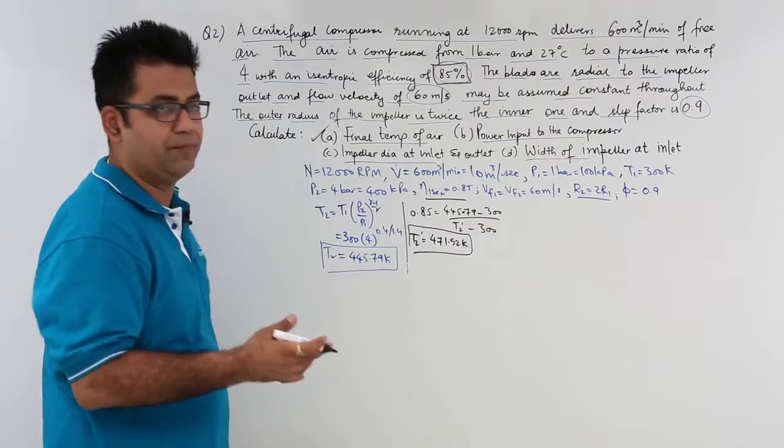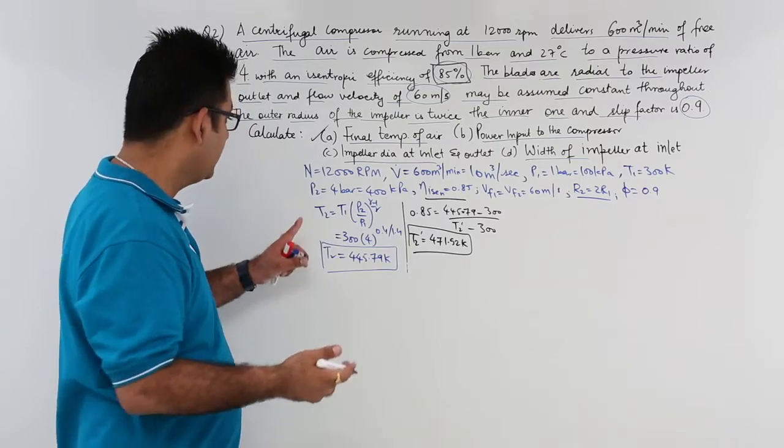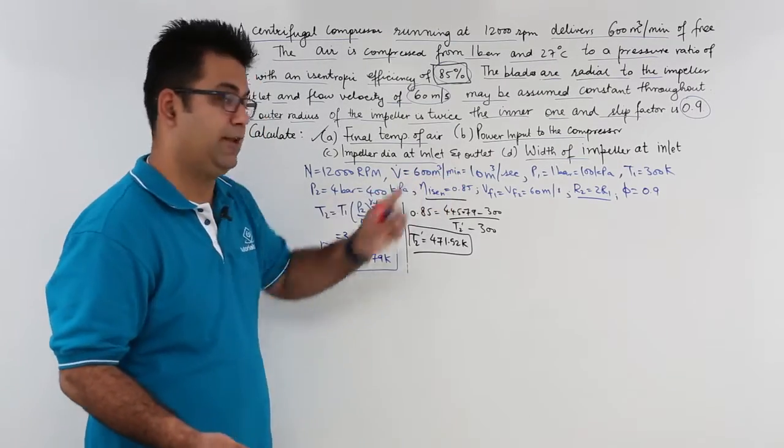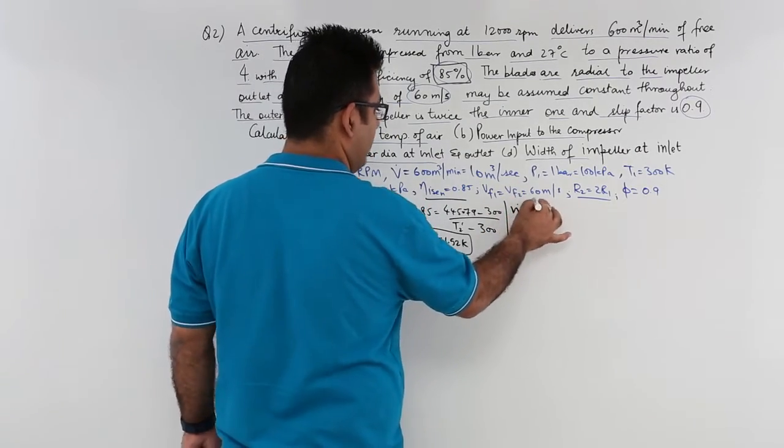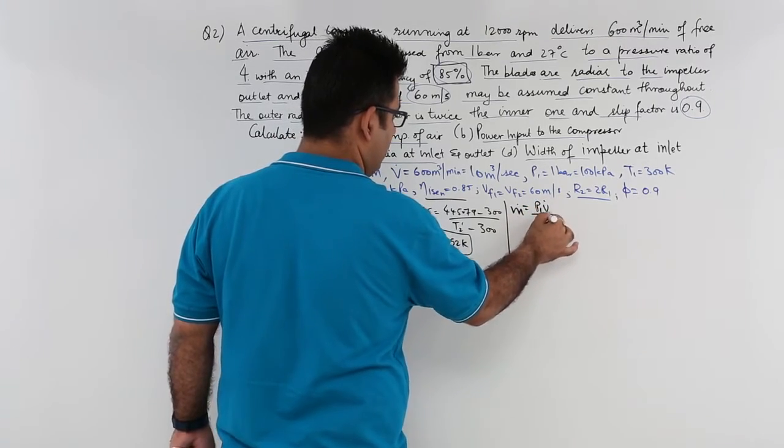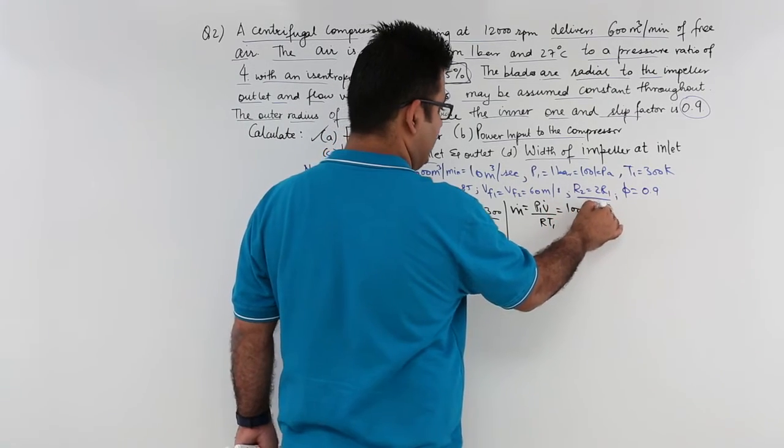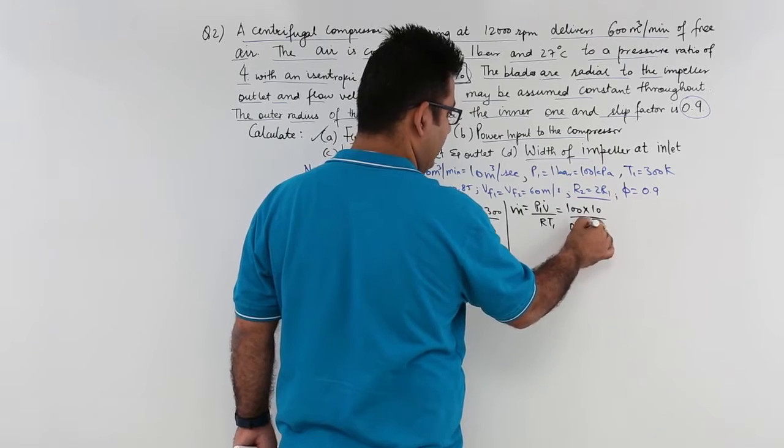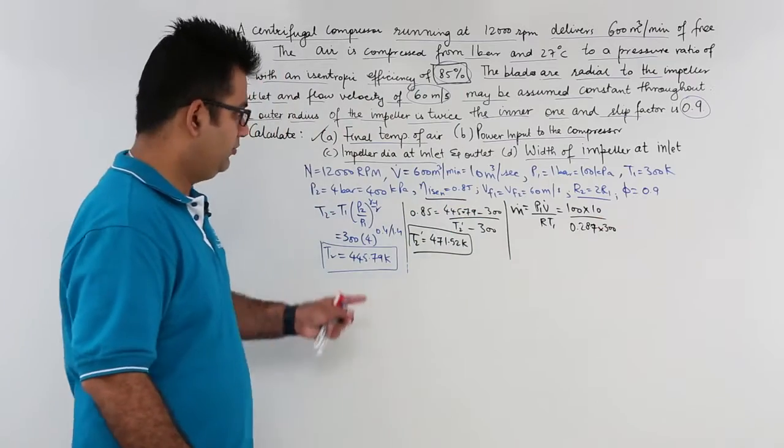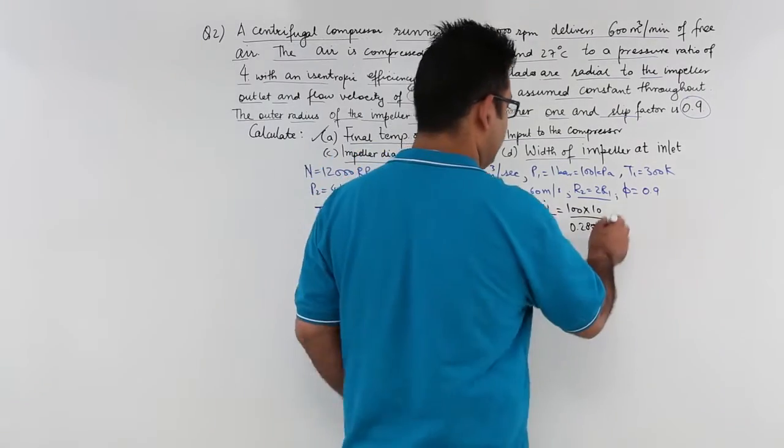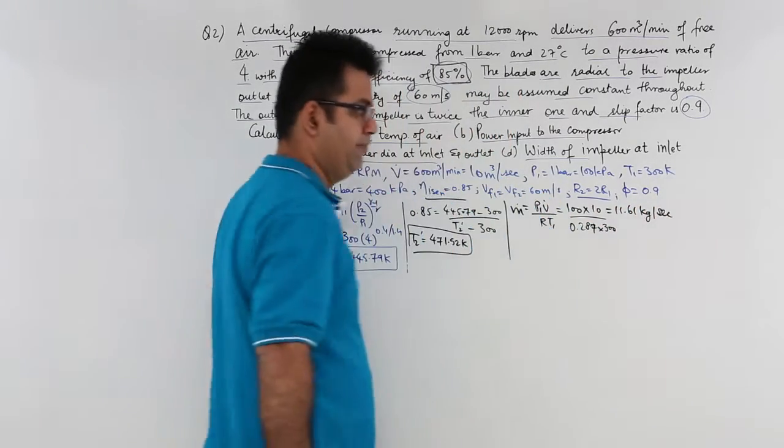Second is the power input to the compressor. To find out the power input we need to find out the mass flow rate from the volume flow rate that we have as 10 meter cube per second. So the mass flow rate would be P1 into V dot upon R into T1. So P1 is 100 kPa, this is 10 meter cube per second, R is 0.287 for air and T1 is 300. So this would give you M dot of 11.61 kg per second.